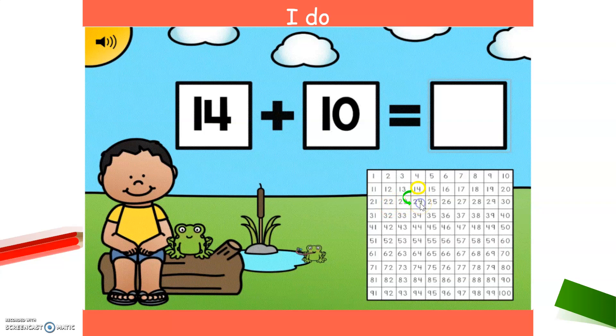So every time you go down, you are adding 10 more. So when you add 10 more to any two-digit number, you go down. And you always start counting from the number that has the ones. If the number has zero ones, that's the number you're gonna use to count down because it's easier. So 14 and 10 more or 14 plus 10 is 24.